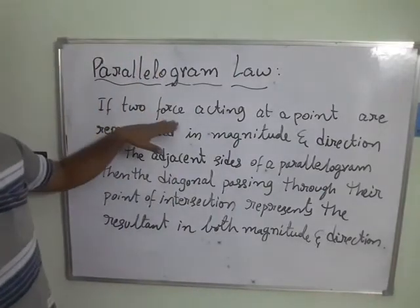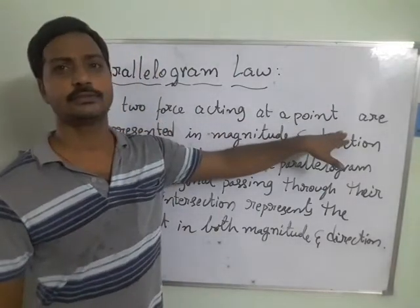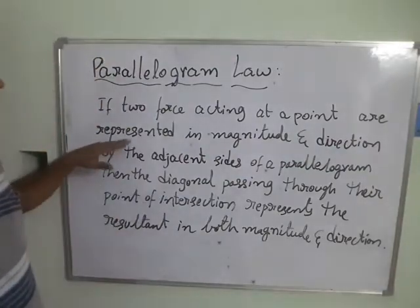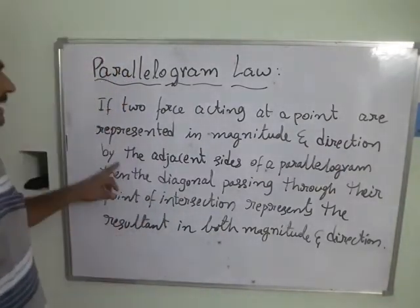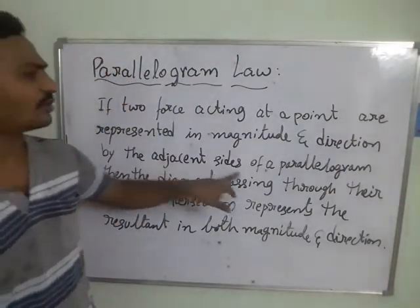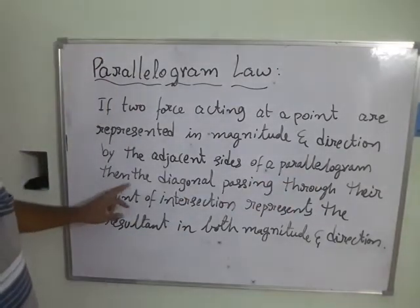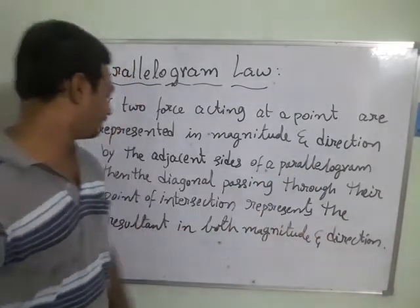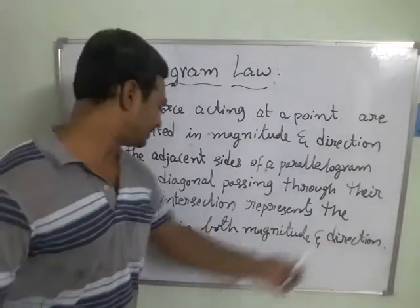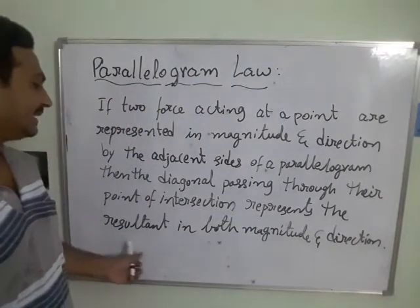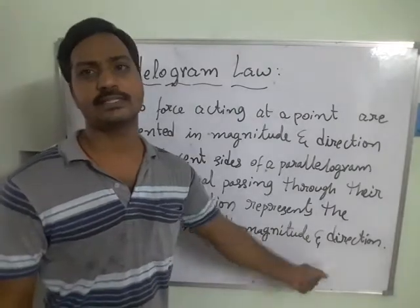If two forces acting at a point are represented in magnitude and direction by the adjacent sides of a parallelogram, then the diagonal passing through the point of intersection represents the resultant in both magnitude as well as direction.